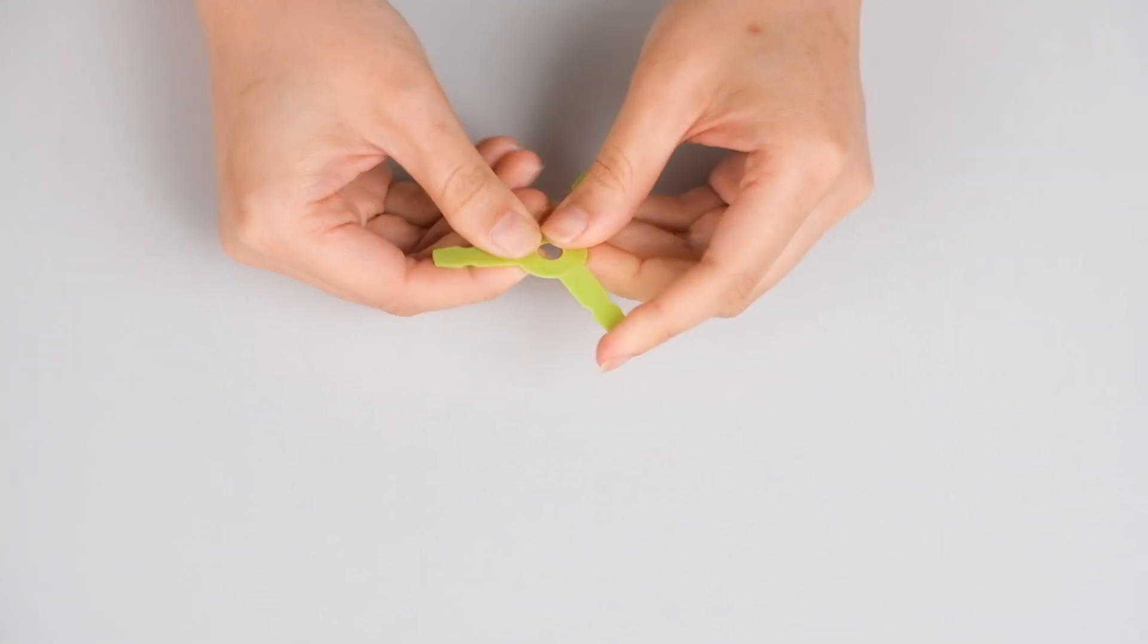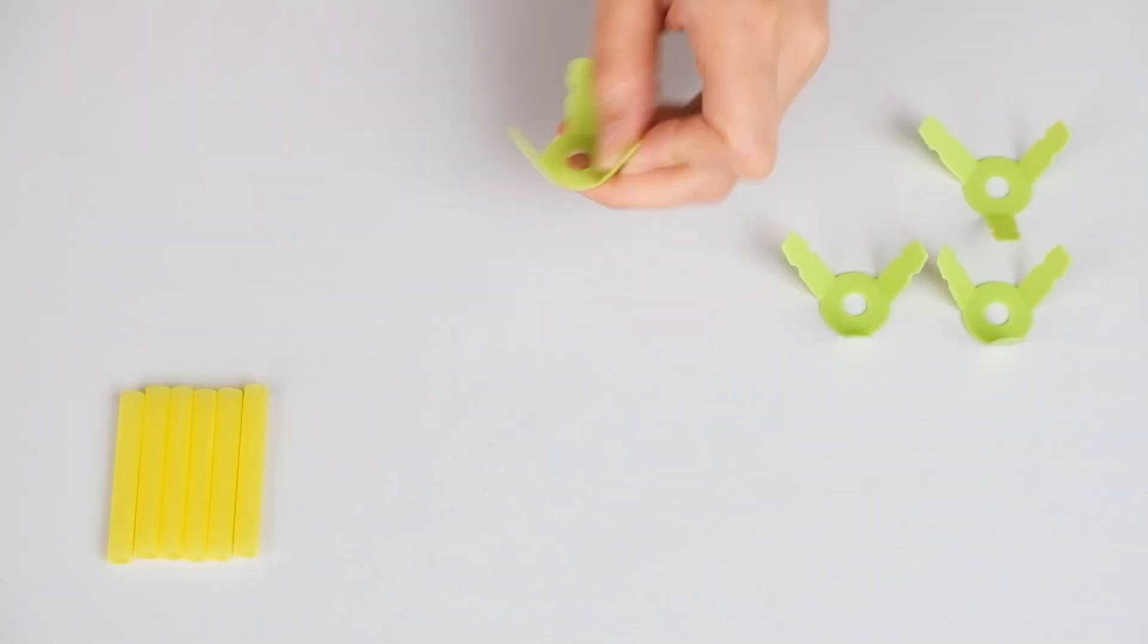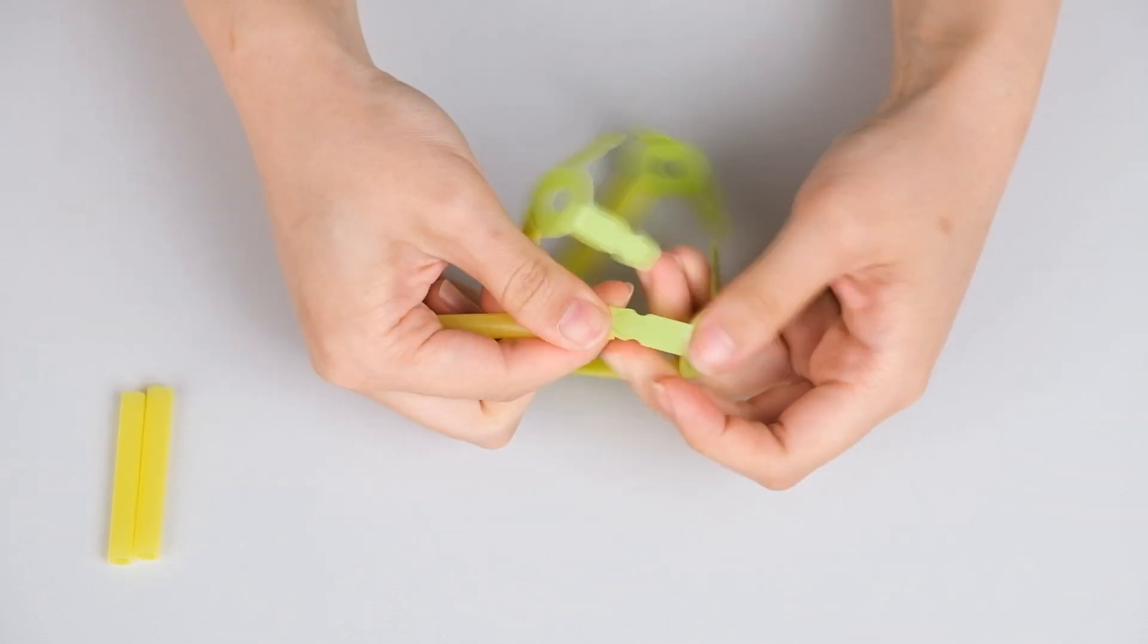Bending a connector creates a natural hinge. Some shapes are easier to build if you bend the connector first.